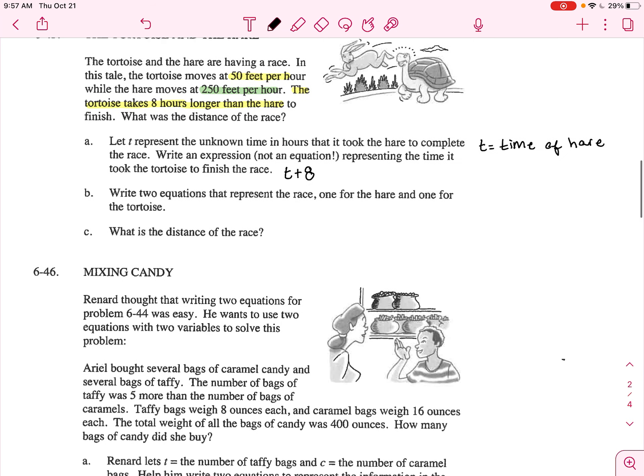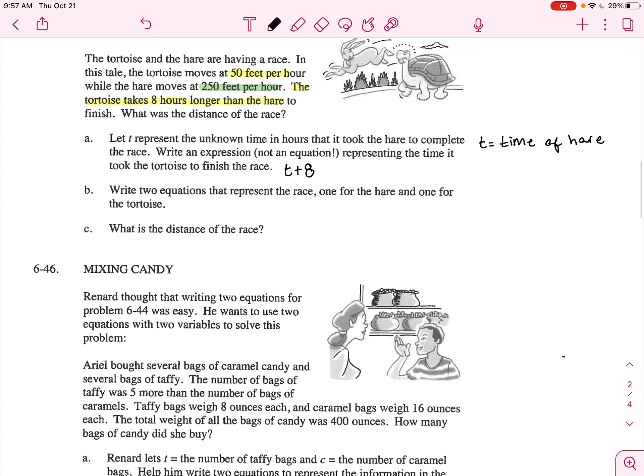B, write two equations that represent the race. One for the hare, one for the tortoise. So let's do the hare first. Well, they're on a race and you know this distance equals rate times time formula.